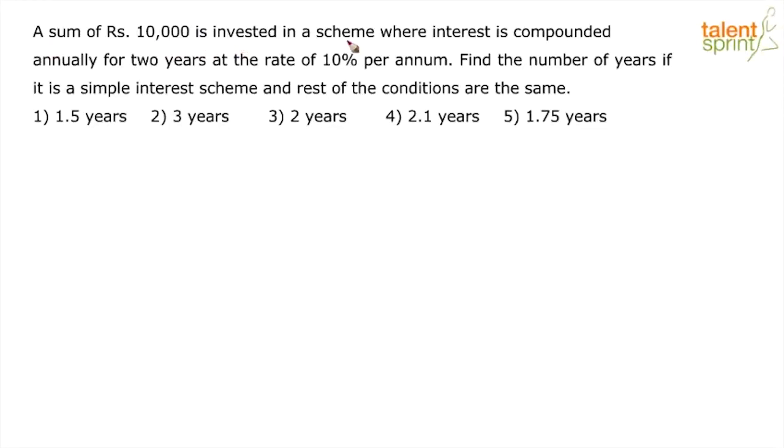A sum of rupees 10,000 is invested in a scheme where interest is compounded annually for two years at the rate of 10% per annum. Find the number of years if it is a simple interest scheme and the rest of the conditions are same.